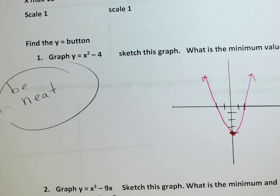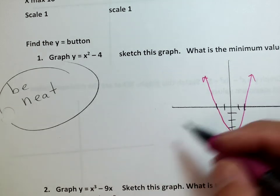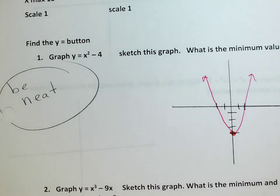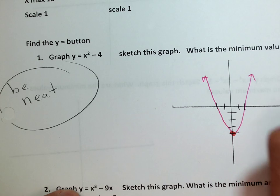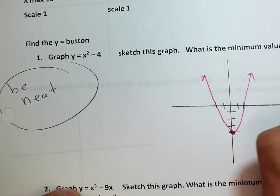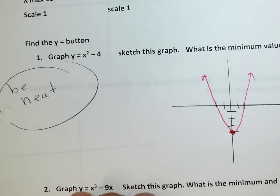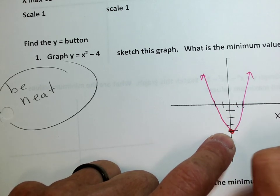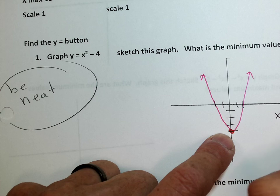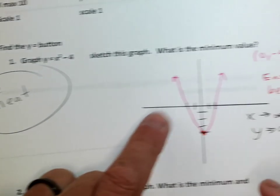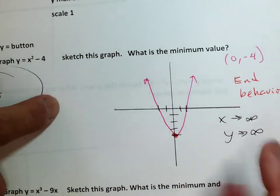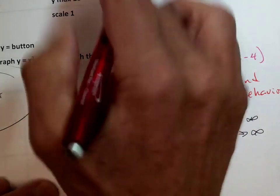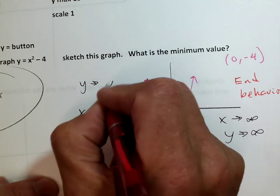What's the minimum value? 0, -4. It is 0, -4. So the minimum value is at 0, -4, okay? End behavior. As x goes to infinity, y goes to positive infinity. As x goes to negative infinity, y goes to positive infinity, okay?